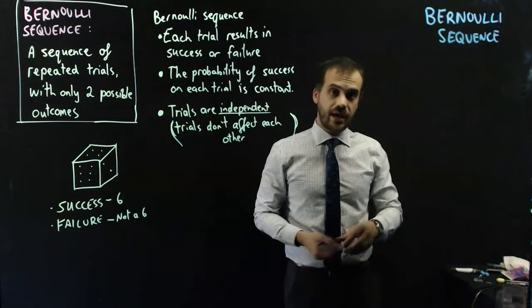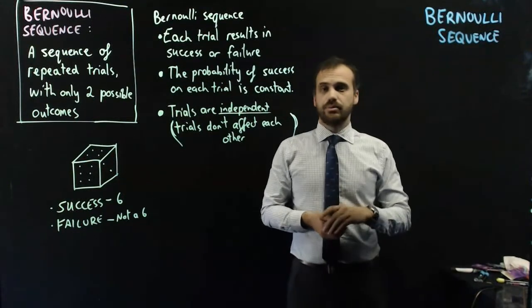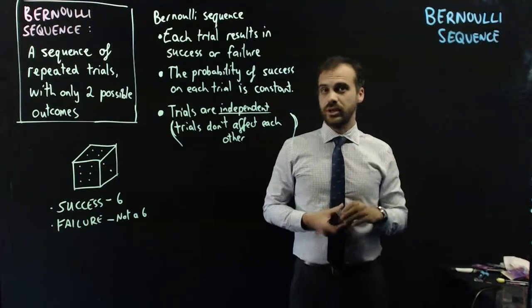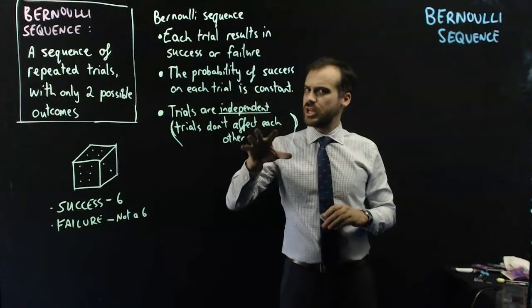But, after picking out that card and putting it over here, and it was an ace, the probability of success on this trial would be 3 in 51. The probability of success is changing. It's not constant.